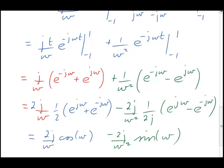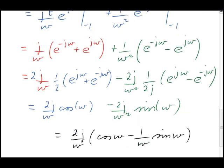That's now finished, but we could tidy it up a little bit. Since 2j is a factor, and also 1 over omega is a factor, we could write it in the following way. That concludes the calculation. So I'll stop here.